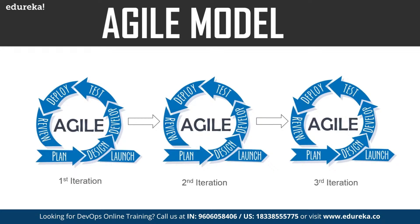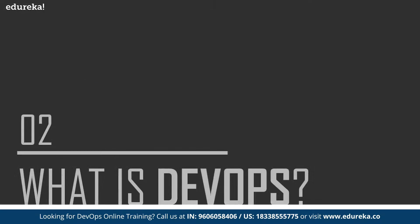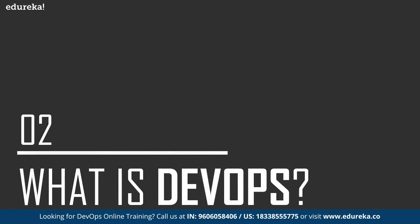This model was better than the previous one, but it too had drawbacks. While it brought agility to the development team, the operations team still did not come up to speed. Because of this, there was constant conflict between the development and operations teams, which hampered the pace of software development and release. This was the biggest drawback of the agile model, leading to the DevOps approach.